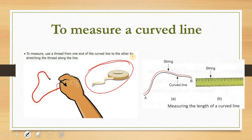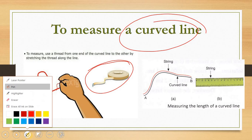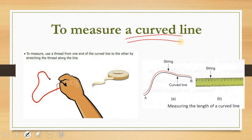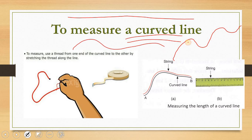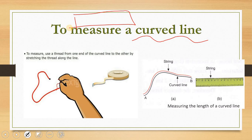You have two things to measure: one is the curved line and one is the circumference. I'm going to teach the curved line first. Curved line maksudnya garis yang ada curve — dia tidak lurus. This is a straight line; a curved line is contohnya macam ni — that is a curved line. So how do you measure a curved line? Sebab kita tahu pembaris kita lurus — kita tidak boleh bengkokkan untuk ikut curved line.